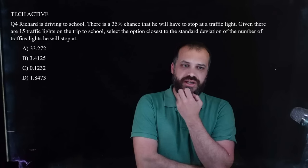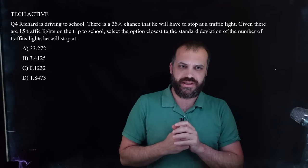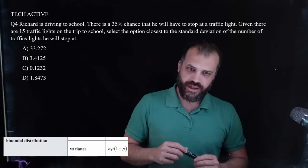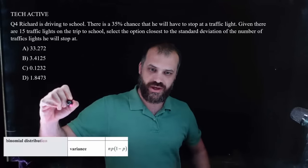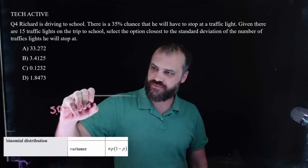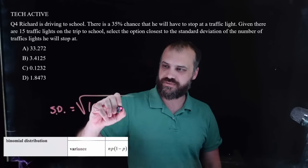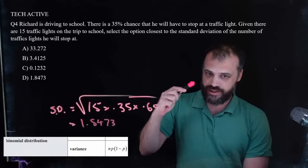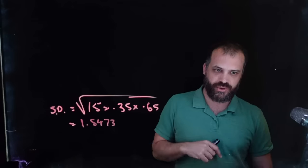Tech Active. Try it. Now I'm going to do it. What have we got? A 35% chance. Feels like a binomial probability. And they're asking for the standard deviation. Formula sheet, please. The formula sheet doesn't have standard deviation on it. It has variance on it. But remember that standard deviation is the square root of variance. So we're just going to do standard deviation equals the square root of n number of trials, 15 traffic lights, probability of success, 0.35 times 1 minus p, probability of failure, 0.65. Type it into your calculator. 1.8473. Option D. Done. Celebrate. That was a quick one.